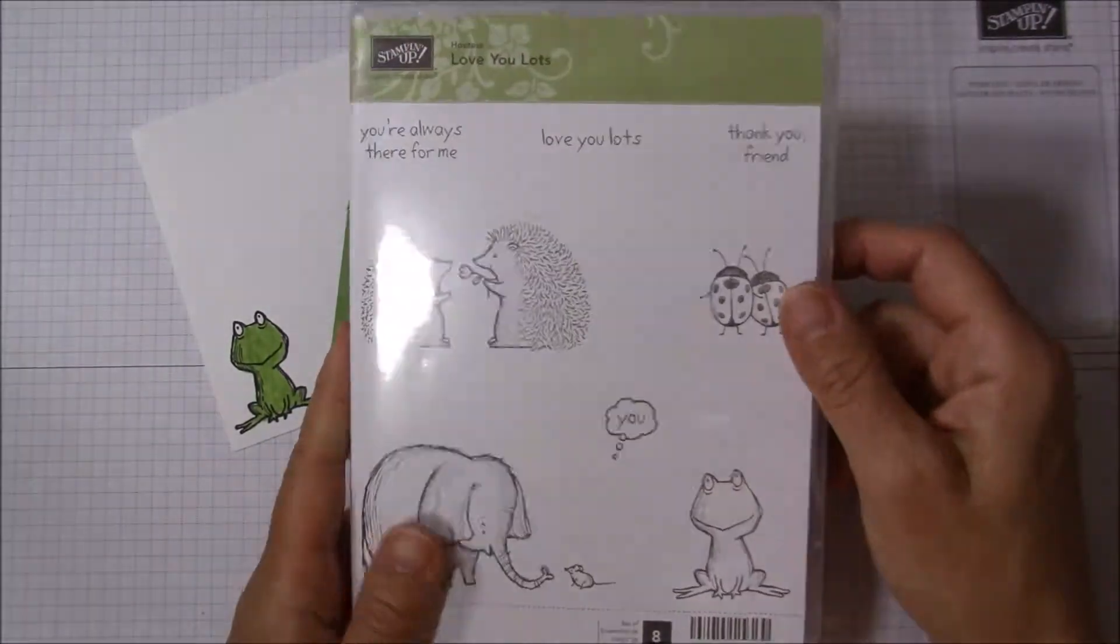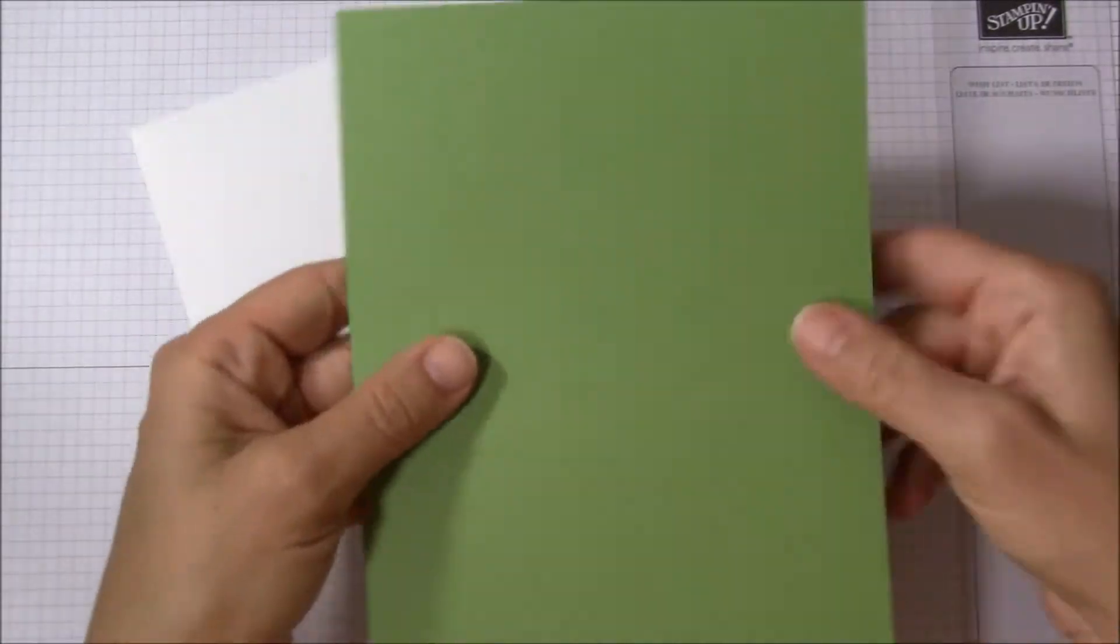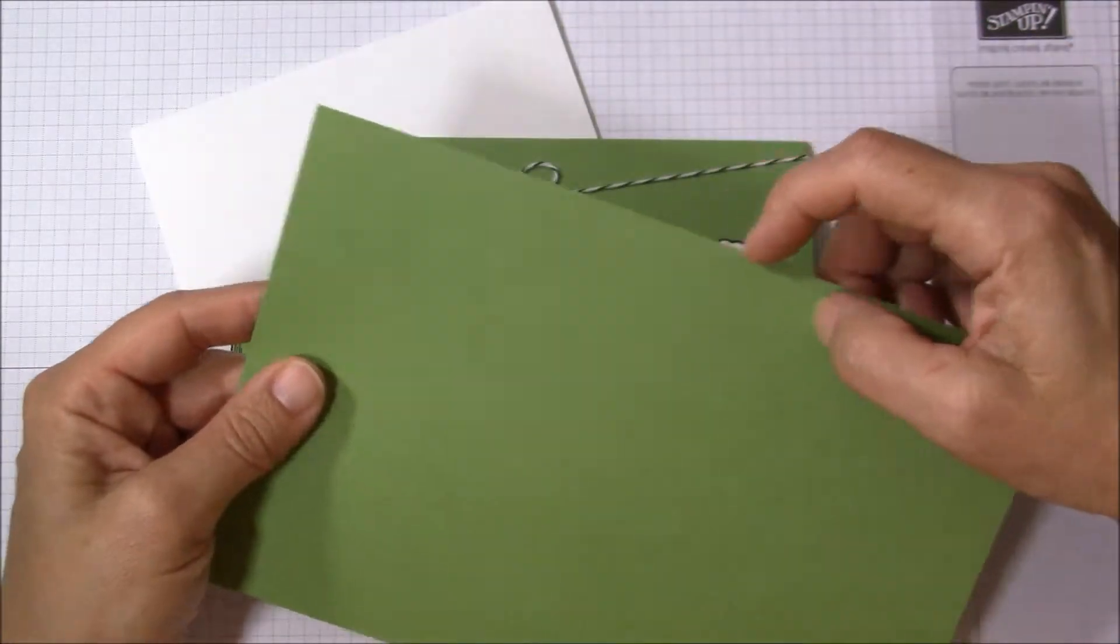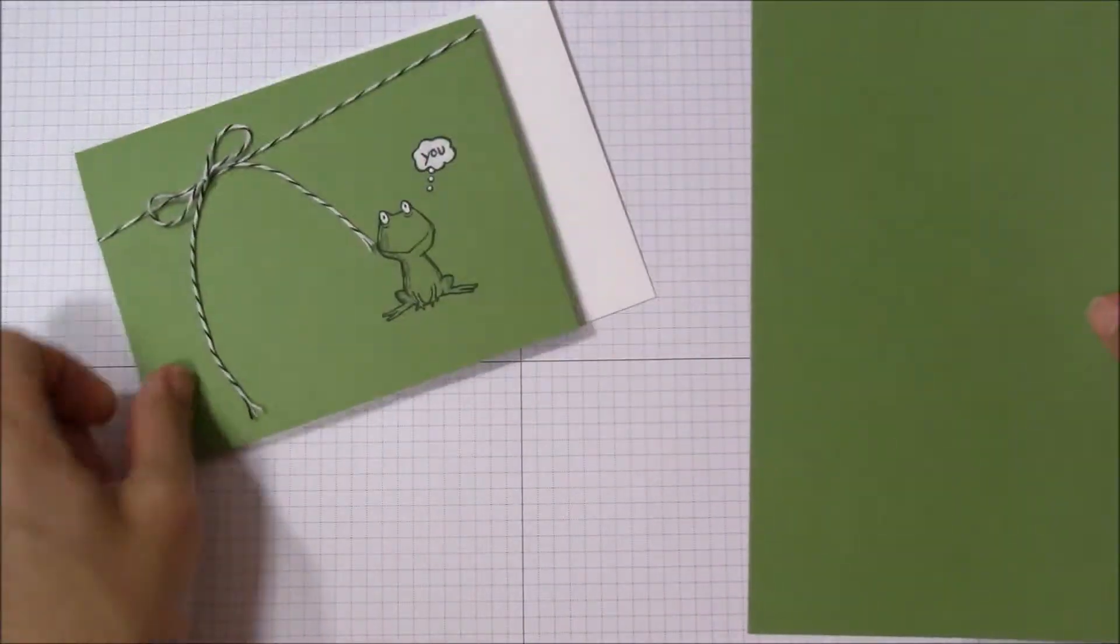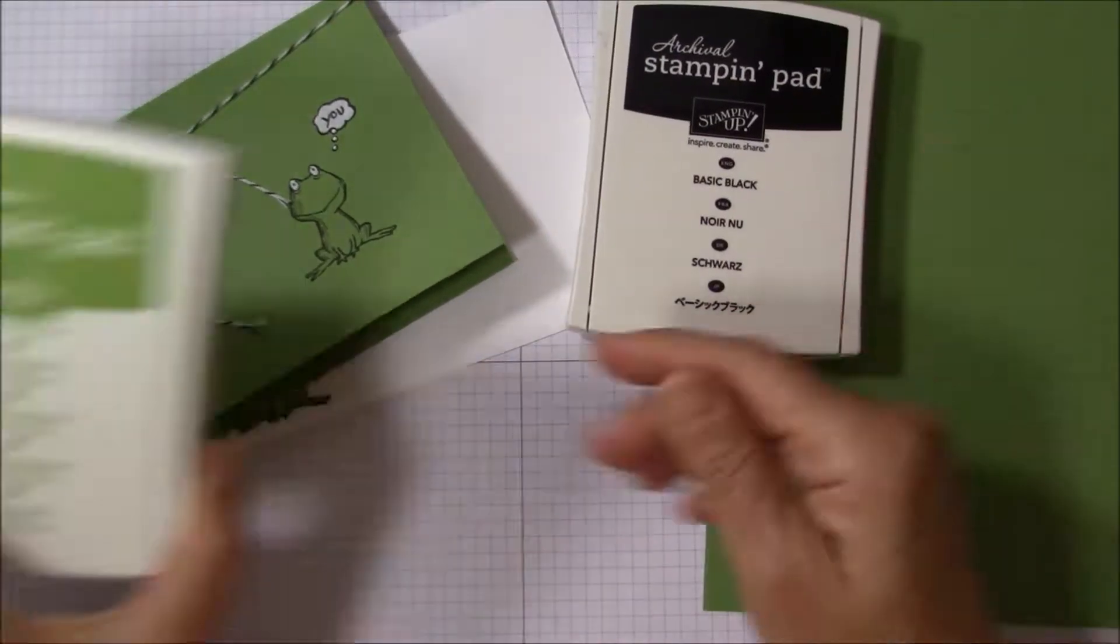You will need a half sheet of wild wasabi, so five and a half by eight and a half, and I scored it at the four and a quarter mark. You'll need the basic black archival ink.